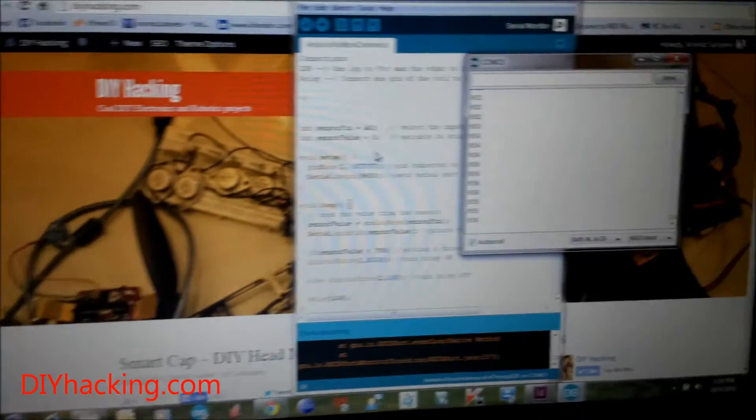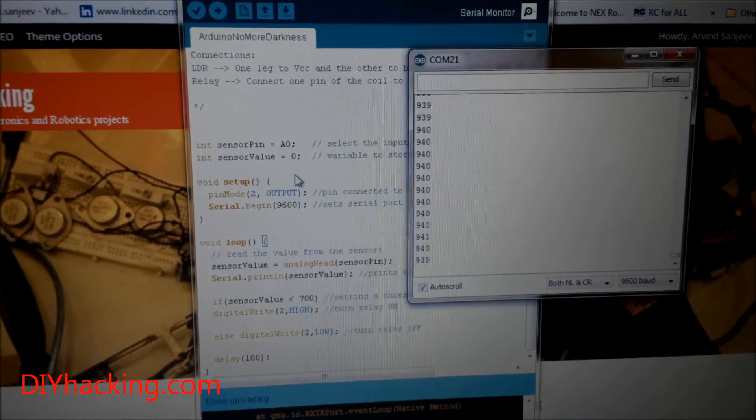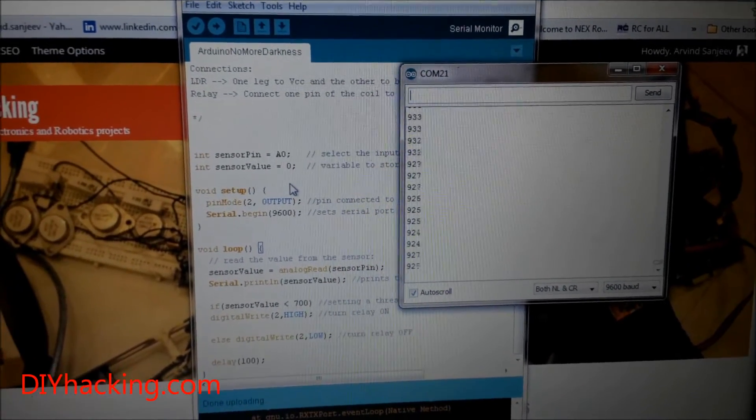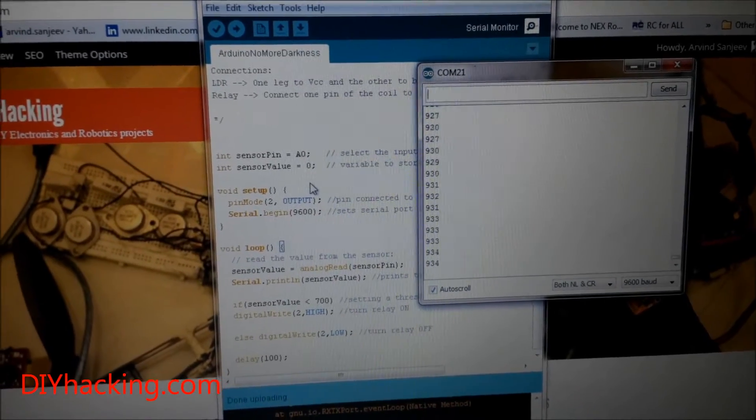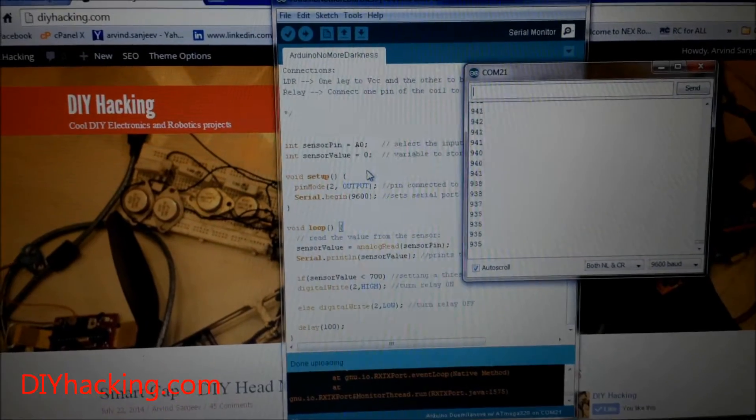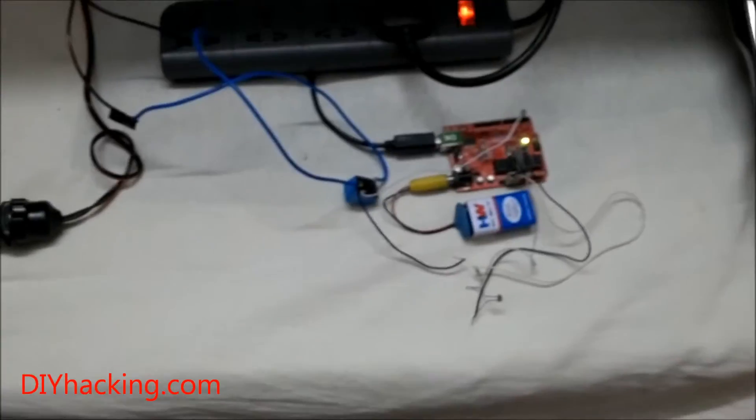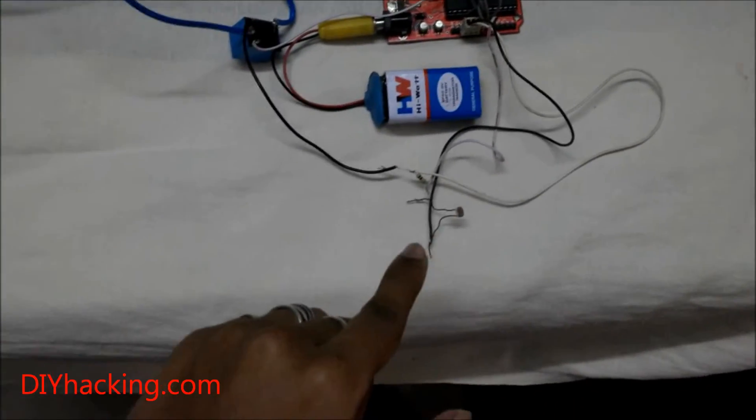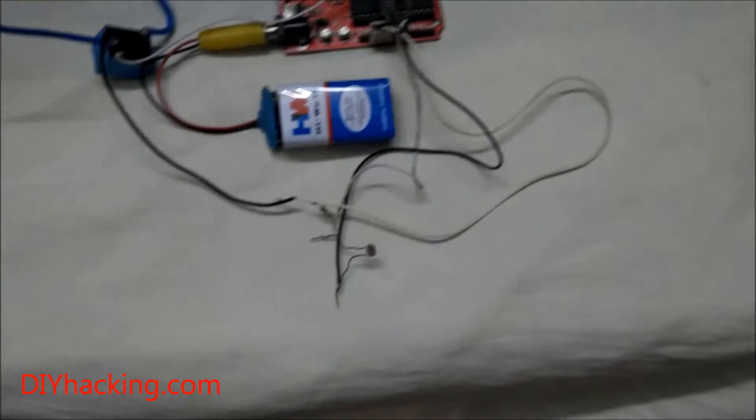The light intensity values are shown through the serial monitor. You can check your light intensity values empirically from your project—they may differ. Now I'll show you the working of the project. Whenever I use my hand to cover the surface of the LDR, blocking all the light falling on its surface, it automatically turns the light bulb on.